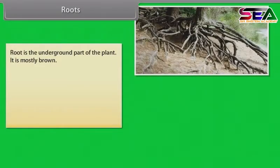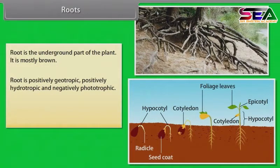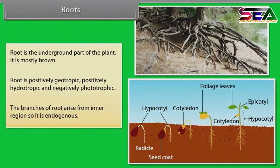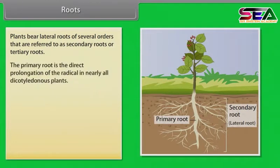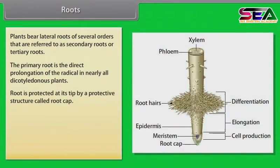Root is the underground part of the plant. It is mostly brown. Root is positively geotropic, positively hydrotropic and negatively phototropic. The branches of root arise from the inner region, so it is endogenous. Plants bear lateral roots of several orders referred to as secondary or tertiary roots. The primary root is the direct prolongation of the radicle in nearly all dicotyledonous plants. Root is protected at its tip by a protective structure called root cap.